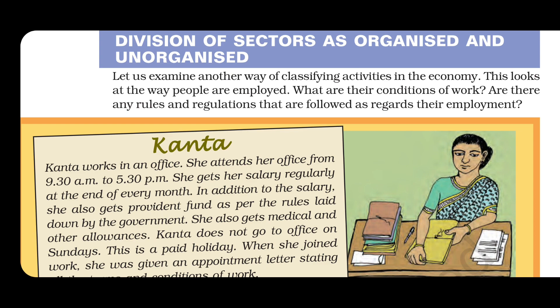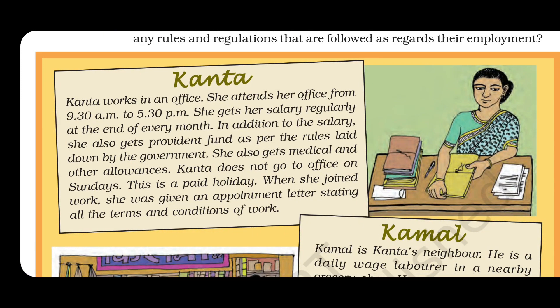The sector is divided into two parts: organized and unorganized. Kanta works in an office. She attends her office from 9:30 a.m. to 5:30 p.m. She gets her salary regularly at the end of every month.